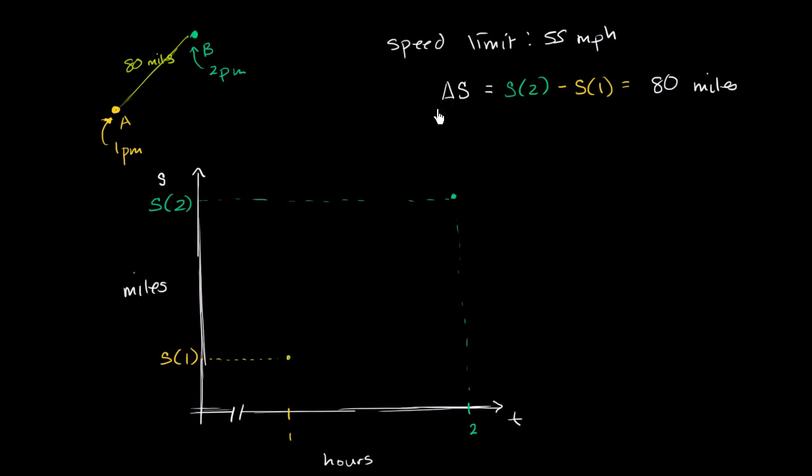And then what is our change in time? Over our change in time, well, that's going to be 2 minus 1, which is just going to be 1 hour, over 1 hour. Or we could say that the slope of the line that connects these two points, let me do that in another color, the slope of this line right over here is 80 miles per hour. Slope is equal to 80 miles per hour.